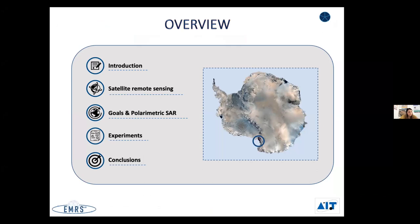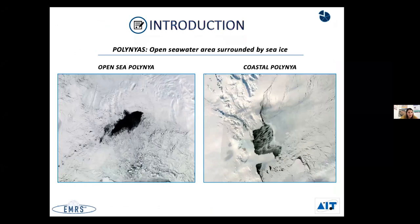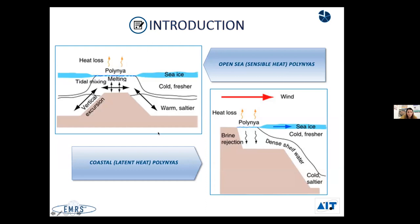Polynyas are sea water regions that are free from the surrounding sea ice. As you can see from these optical images collected by the MODIS sensor in visible band, they are characterized by different shapes. They can be homogeneous or they can have some streaks of frazil ice inside them.